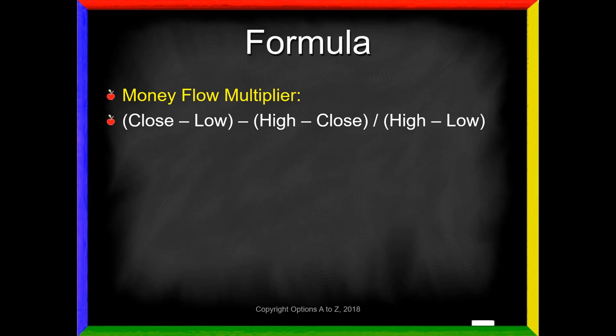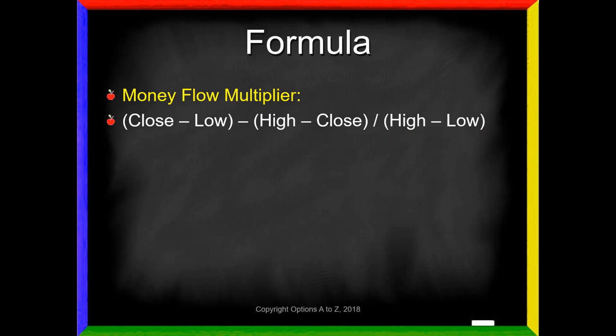Let's take a look at the details of the money flow multiplier. We're going to look back 20 days. During that 20-day period, we're going to look at the close minus the low, subtract the high minus the close, and divide that number by the high minus the low. It certainly looks confusing, but let me show you how easy it is to understand conceptually. Let's say our stock is trading at 100, with a 110 high over this 20-day period, and I'll put the stock price right in between at 105.